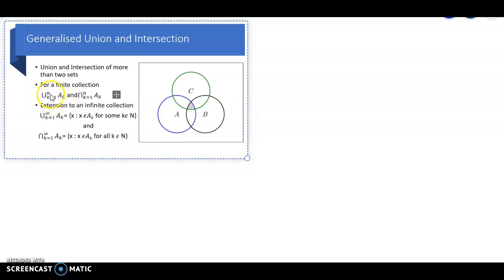This k is only a symbol. Sometimes we write union i equal to 1 to N of A-sub-i. The intersection is denoted by intersection k equal to 1 to N of A-sub-k, which expands as A1 intersection A2 intersection, etc., intersection A-sub-N.